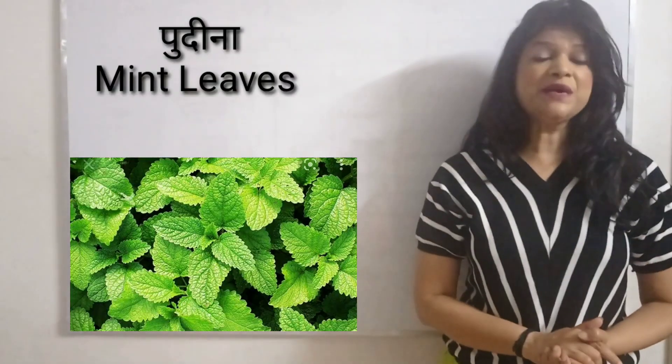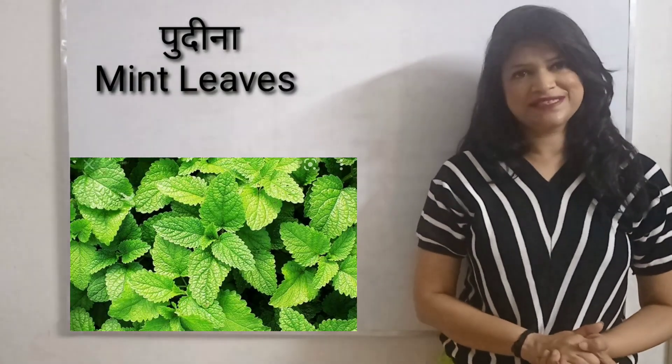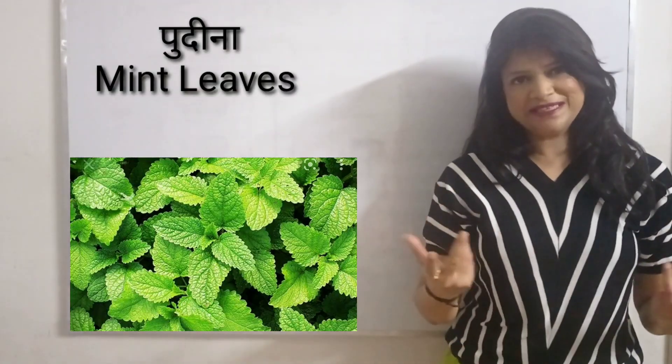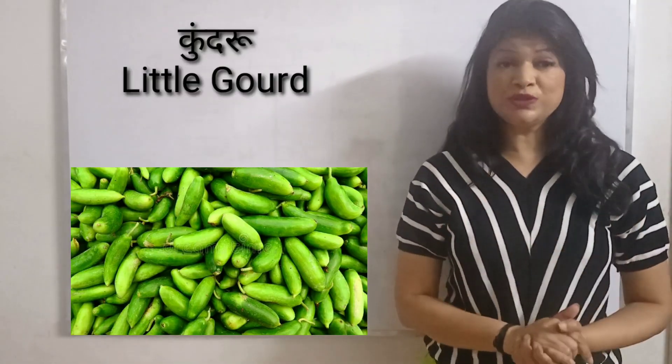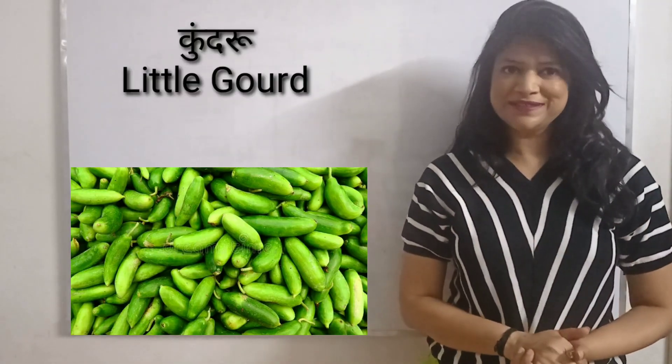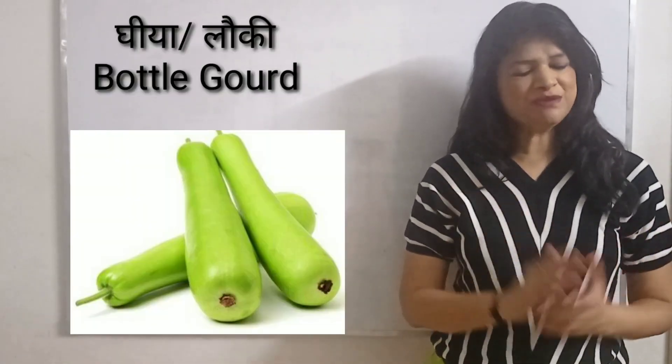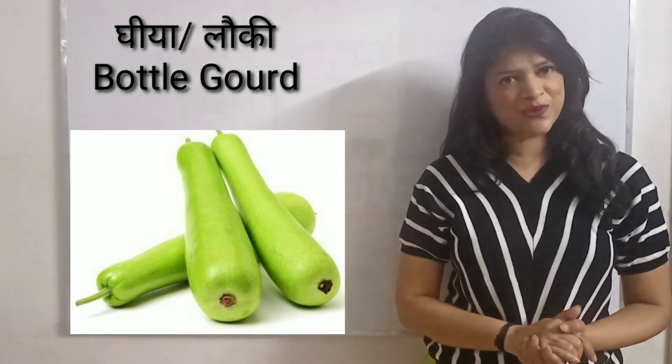Dhani leaves are called coriander leaves in English, or just mint. Now we come to the gourd family. We call little gourd in English, and we call bottle gourd in English.